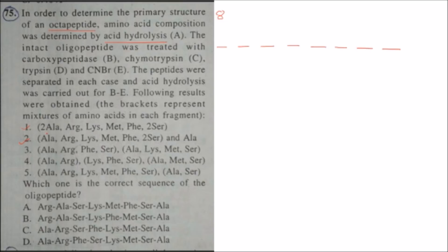Moving to the next enzyme, which is carboxypeptidase. What does carboxypeptidase do? It releases one amino acid from the C-terminal. From the second treatment result, carboxypeptidase will remove an amino acid from the C-terminal, and the amino acid we get separately is Alanine. So Alanine will be at the C-terminal position, and the N-terminal is on the other end.